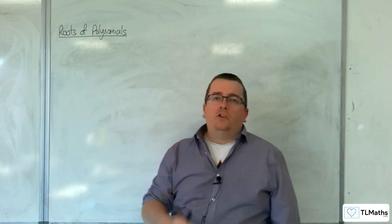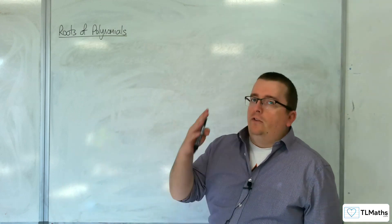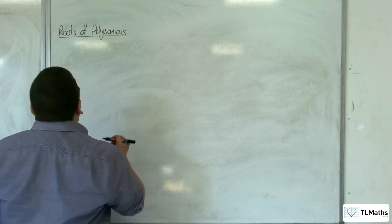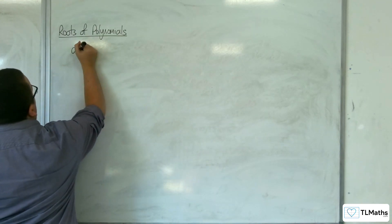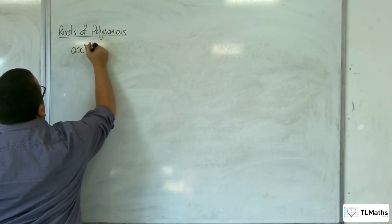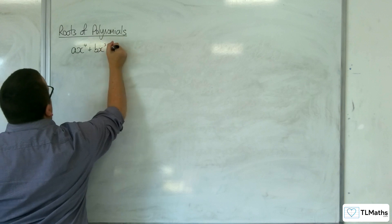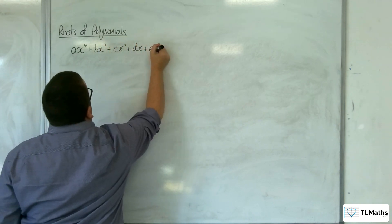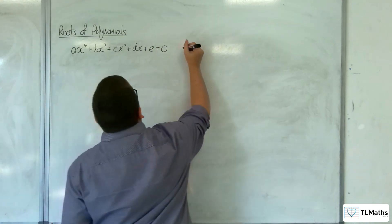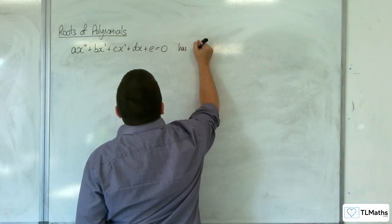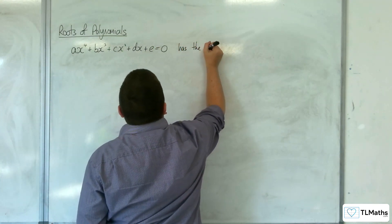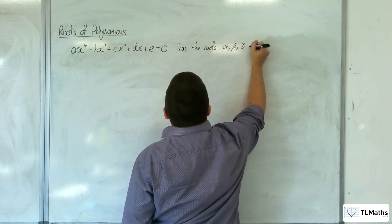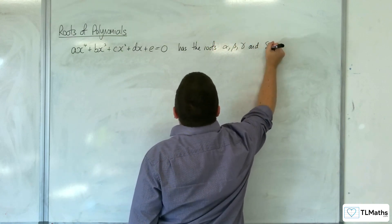So we've looked at quadratics, we've looked at cubics, so finally we're going to look at quartics. The general quartic equation would say that ax⁴ + bx³ + cx² + dx + e = 0 has the roots alpha, beta, gamma, and delta.